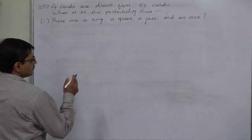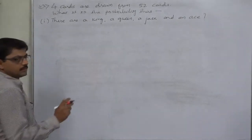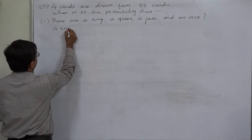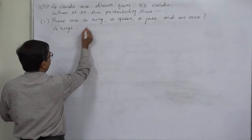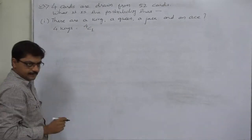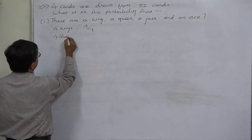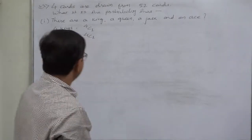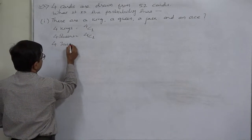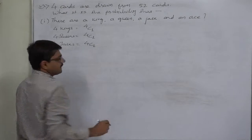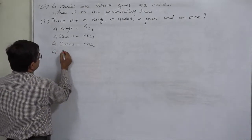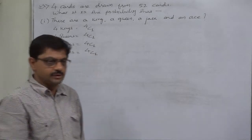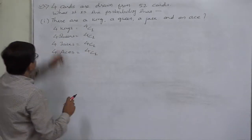To find the favorable number of cases, we need to know how many kings there are — four kings. That means one king out of four can be drawn in 4C1 ways. Similarly, there are four queens, so we can draw a queen out of four in 4C1 ways. Similarly, there are four jacks — again 4C1 favorable cases — and there are four aces, so we can draw an ace out of four in 4C1 ways.